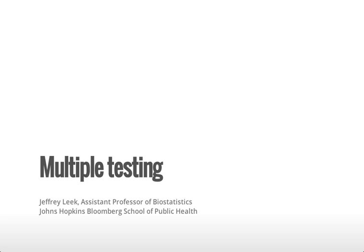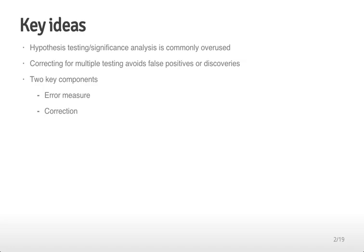This video is about multiple testing. We talked about hypothesis testing earlier in the course, and I mentioned that when you perform more than one hypothesis test you have to do some sort of correction to make sure that you're not fooling yourself. This lecture is about how to do those corrections. The key ideas are that hypothesis testing and significance analysis are commonly overused techniques. What people often do is calculate multiple p-values when analyzing the same data set, then report only the smallest p-value, or report all p-values but claim all p-values less than 0.05 are significant, which leads to problems. So what we would like to do is correct for multiple testing to avoid false positives or false discoveries when performing analyses with many variables.